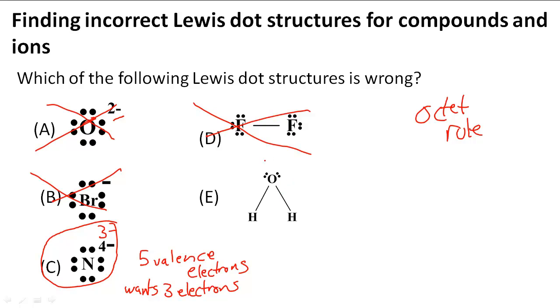For oxygen, counting: one, two, three, four, five, six, seven, eight. So that obeys the octet rule. The hydrogens are sharing their electrons. This is the correct Lewis dot structure, and E is also correct. So C is the answer to this problem.